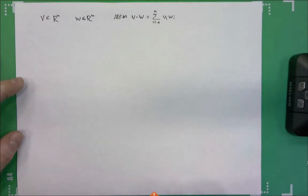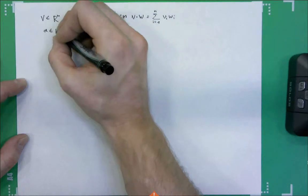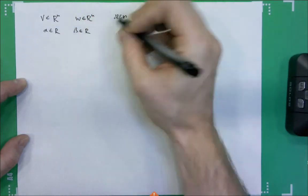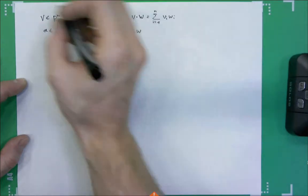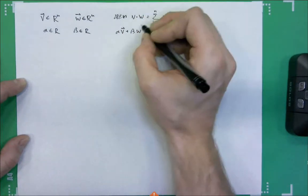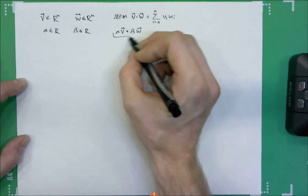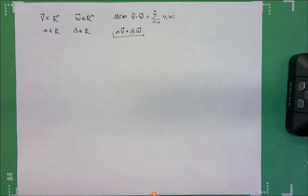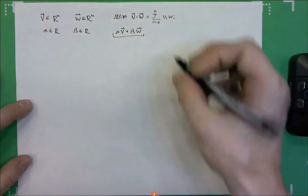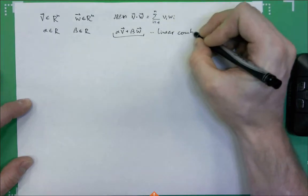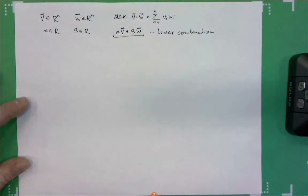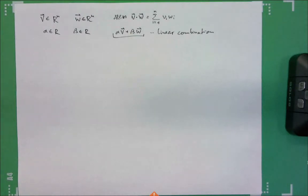Another very basic thing: if I have a scalar alpha and another scalar beta, then I can do alpha*v plus beta*w. I'm writing vectors with arrows to distinguish them from scalars. This is called a linear combination of vectors. The idea is you take every single vector, multiply it by a scalar, and sum them all together. You can do this for as many vectors as you want.